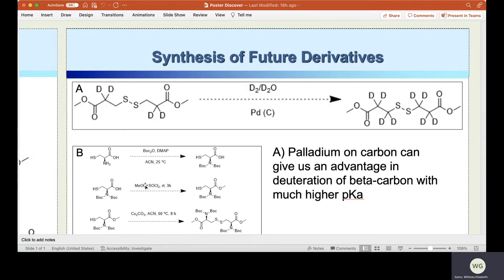Looking forward, we want to try to deuterate the beta protons on our molecule to do a similar analysis with EPR. The issue here is the high pKa of the beta protons, indicating harsher conditions will need to be implemented.